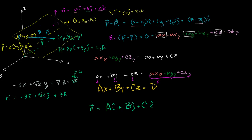The first thing we can do is construct a vector between this point that's off the plane and some point that's on the plane. We already have a point from the last video that's on the plane: x sub p, y sub p, z sub p. So let's construct this orange vector whose tail is on the plane and goes off the plane to this position x0, y0, z0.